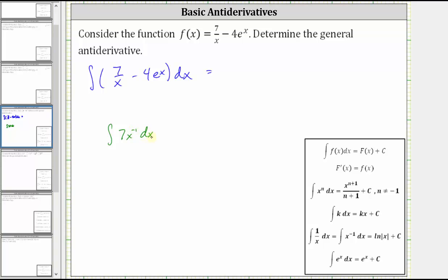A common error is to try to apply the power rule of integration, but notice how the power rule of integration does not apply when N equals negative one. Because if we did try to apply the power rule, we would have seven times X to the power of negative one plus one, which is zero.